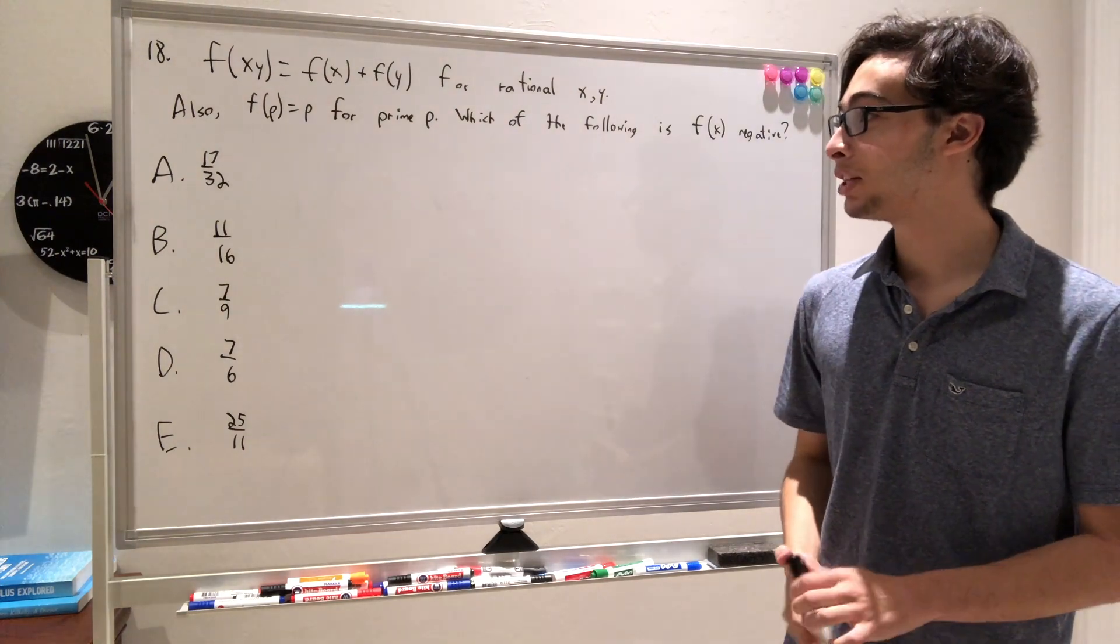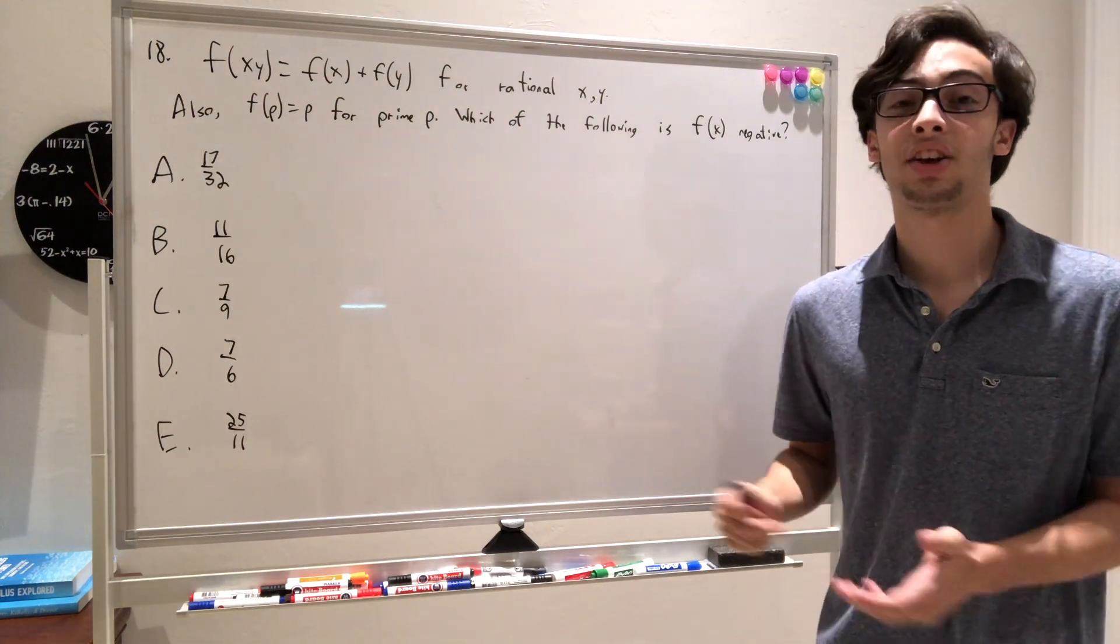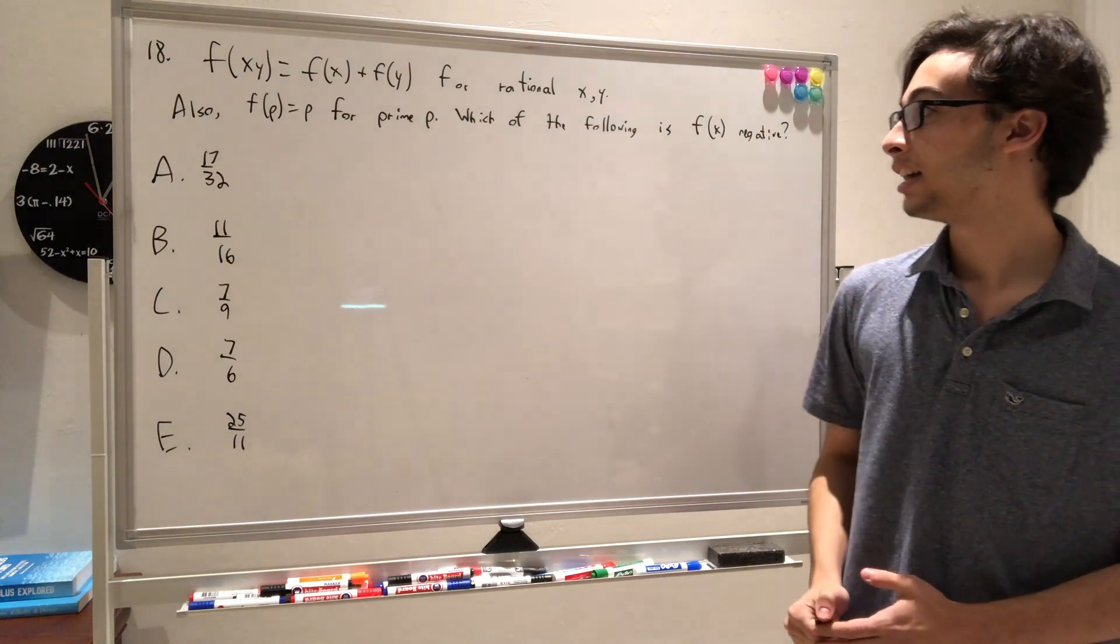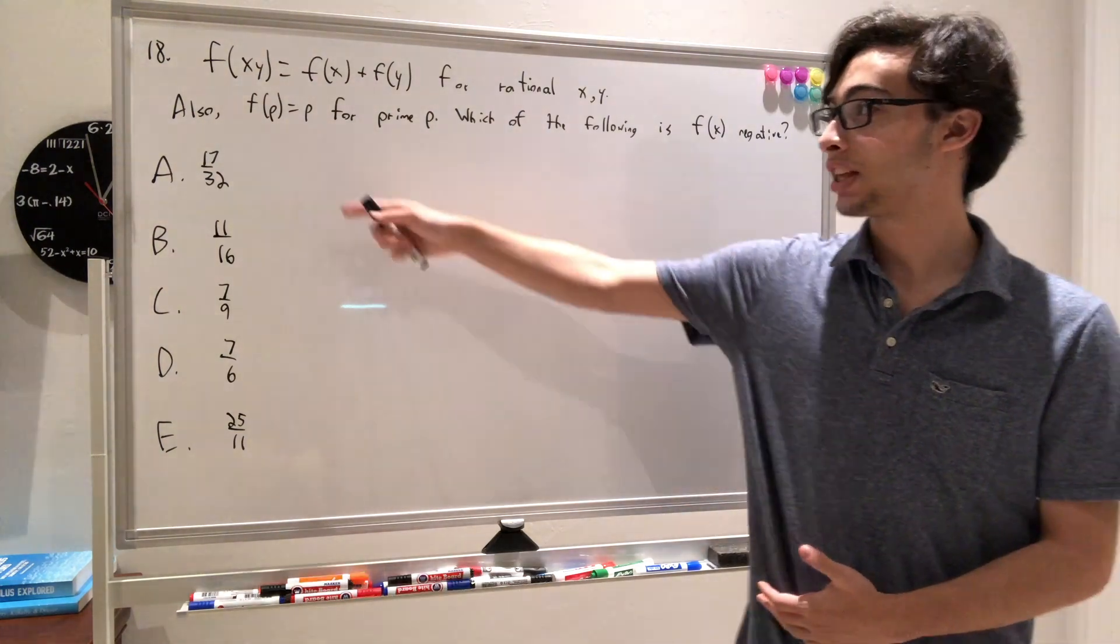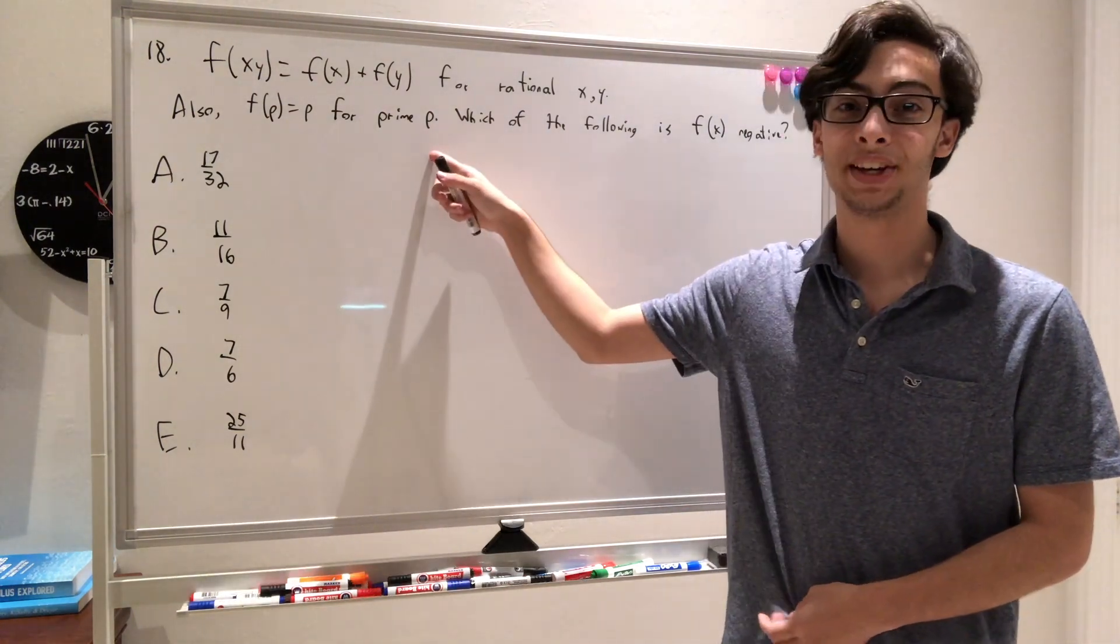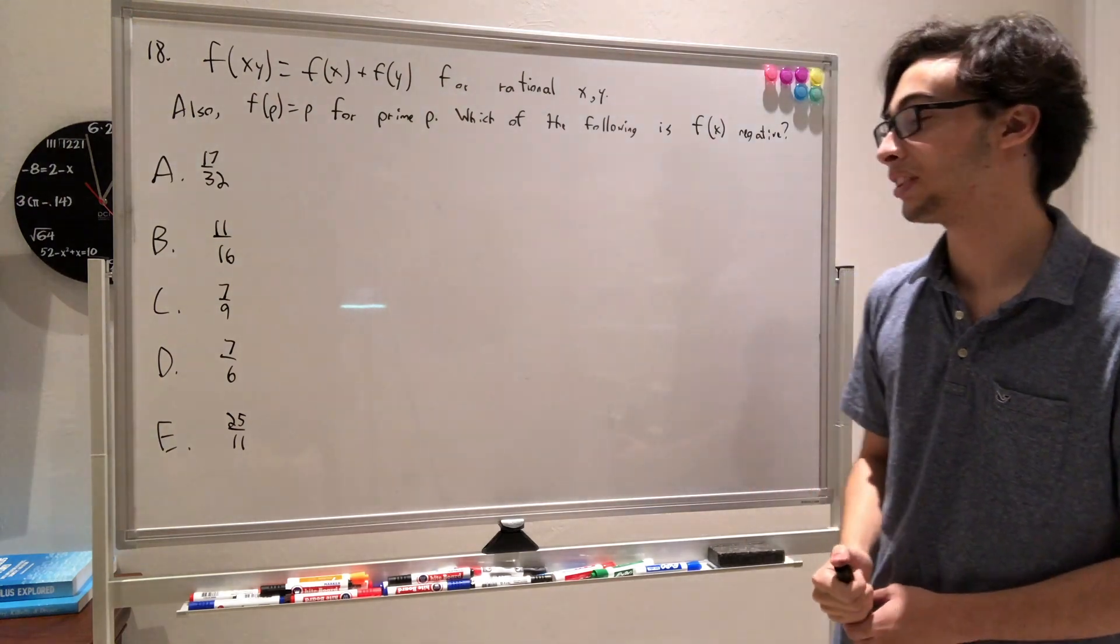This problem gives us f of xy is equal to f of x plus f of y, and I saw this and immediately thought of natural log. However, the next stipulation shows that f of p must equal p for a prime p, and sadly that removes the ability for that function to be worked.